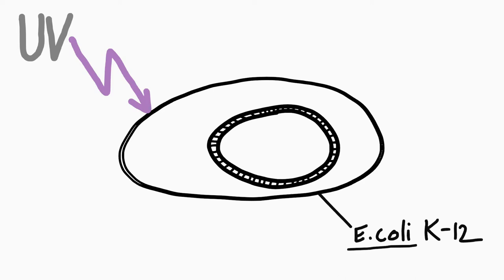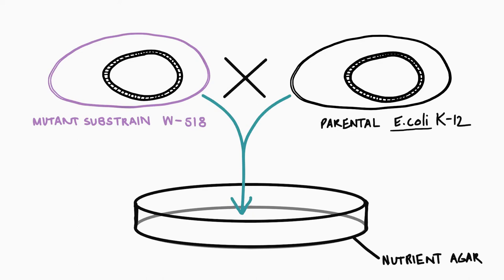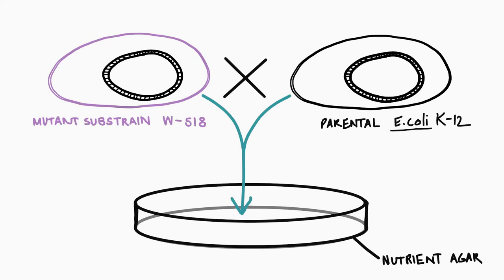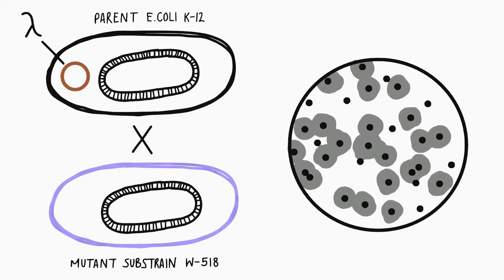The Lederbergs essentially stumbled across the phage when incubating a UV-treated mutant substrate with parental E. coli K-12 in an unrelated experiment. Due to the presence of plaques, they surmised original K-12 was lysogenic for bacteriophage, which they named lambda, while the mutant culture had lost the prophage and become sensitive, serving as an indicator.